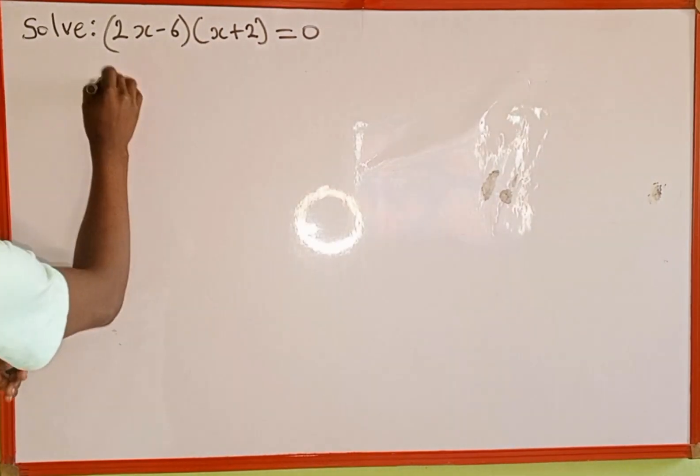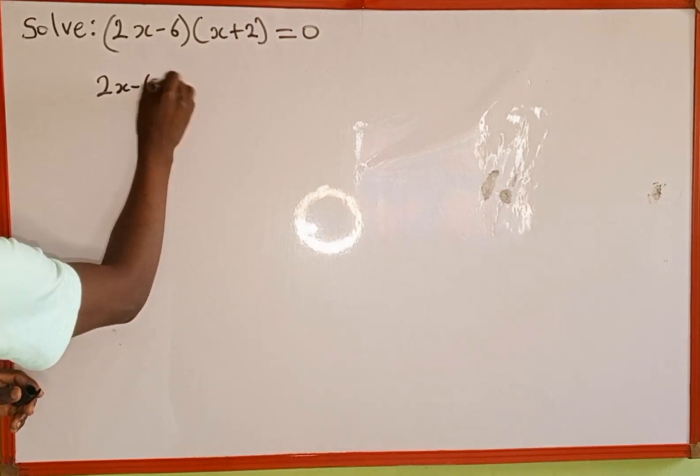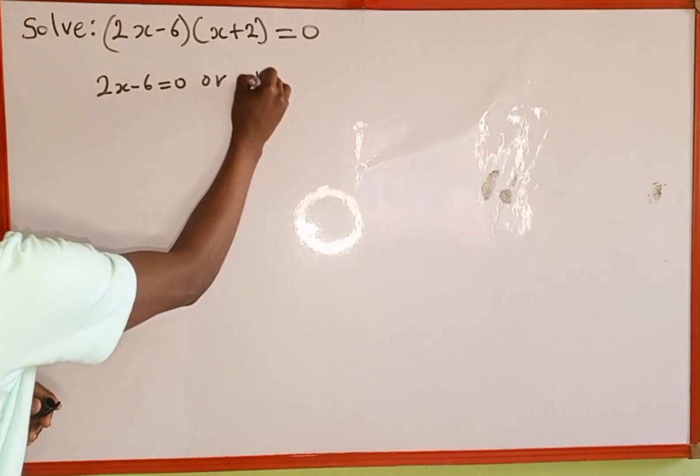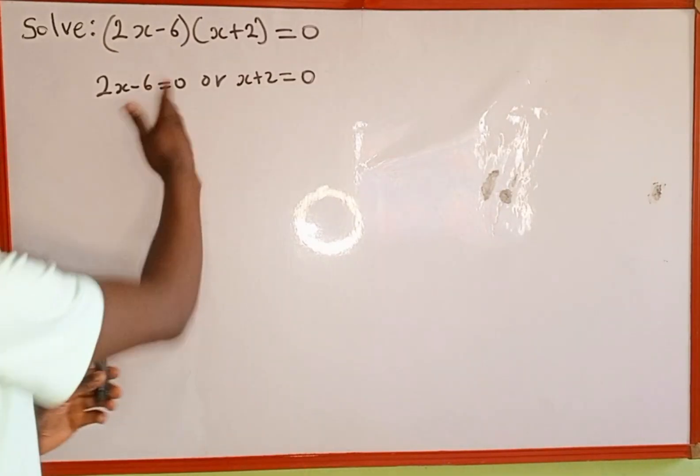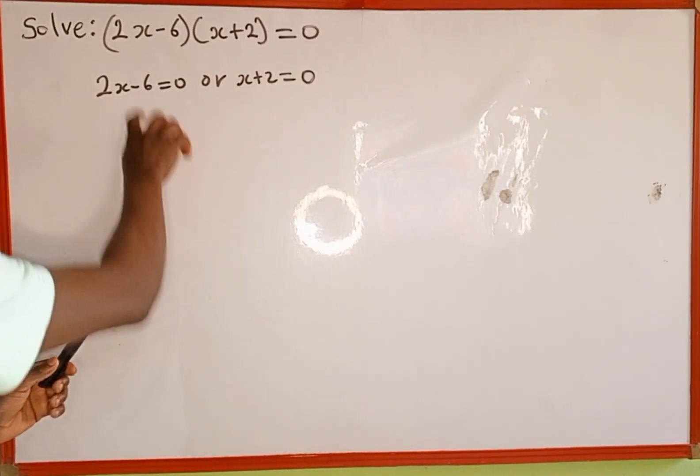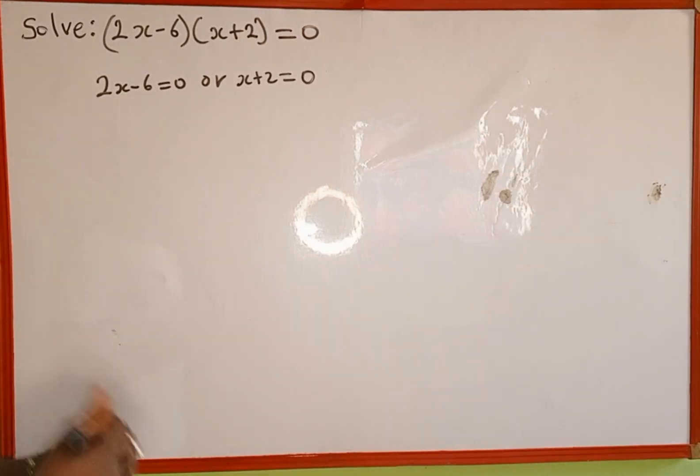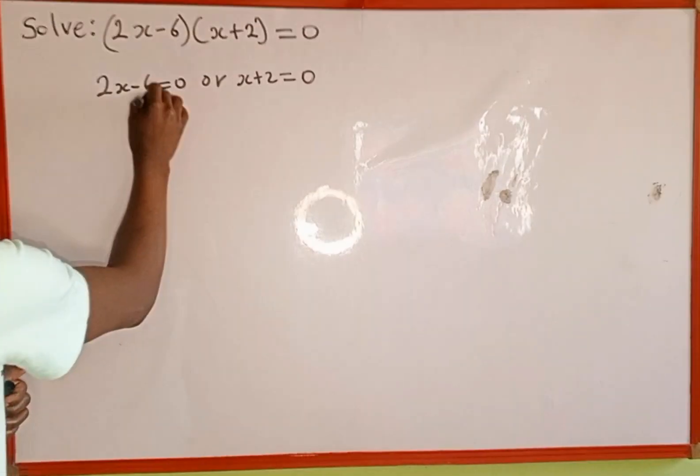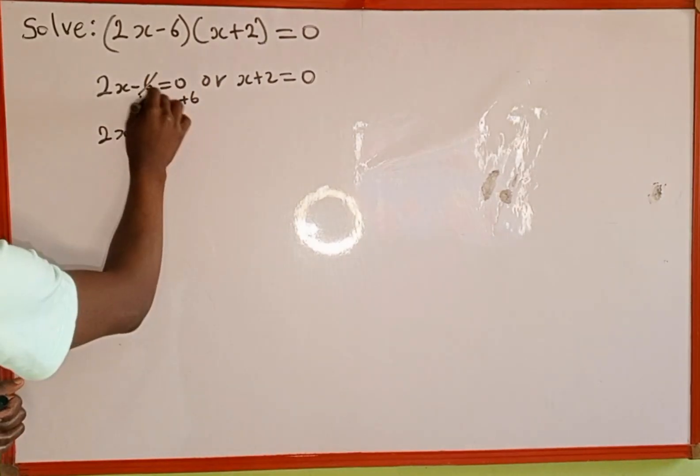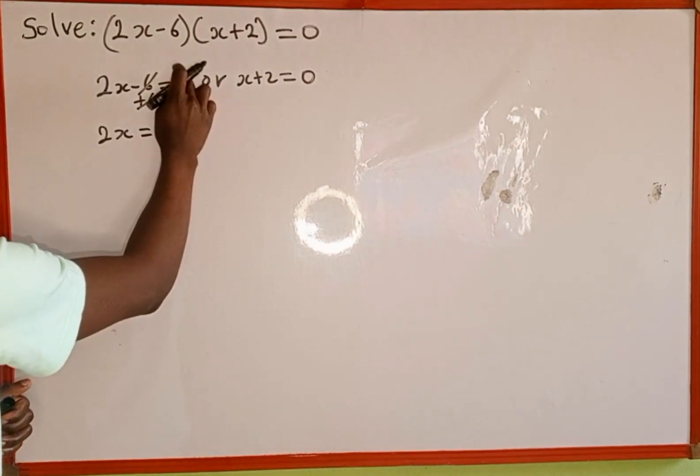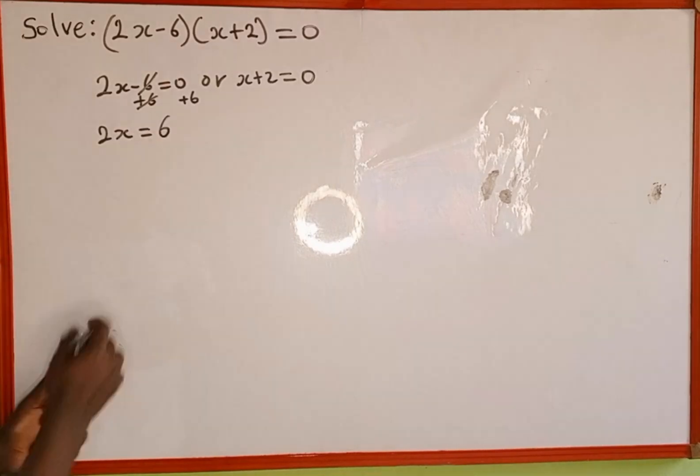So we are going to have 2x minus 6 is equal to 0, or the second one x plus 2 is equal to 0. Now we are going to solve for the value of x on both sides. To solve for the value of x here, we add 6 to both sides. We have plus 6 here, then plus 6. So that this is going to cancel this, which equals 0 plus 6, which is 6.